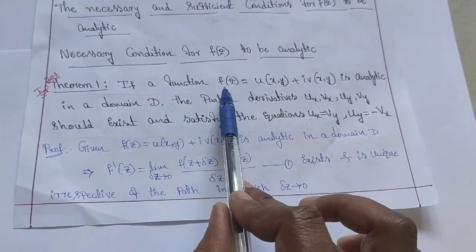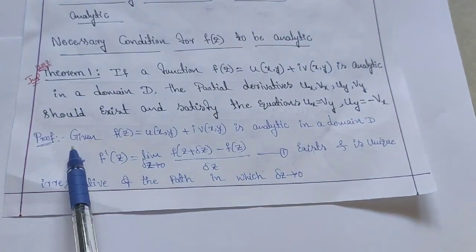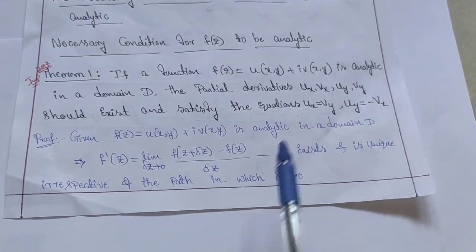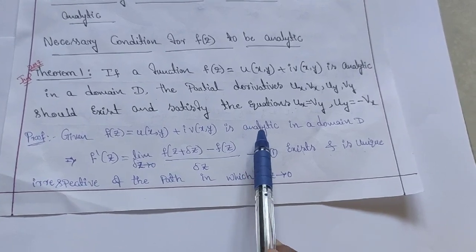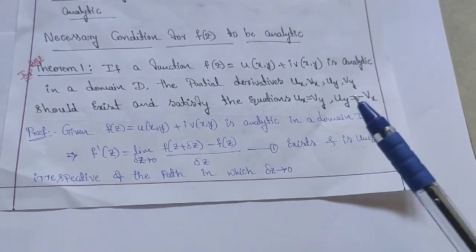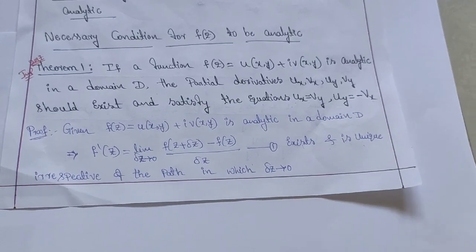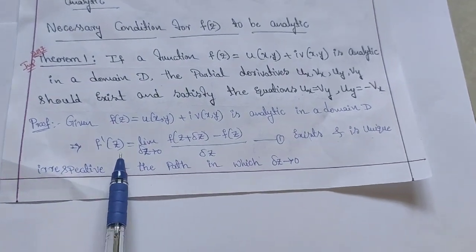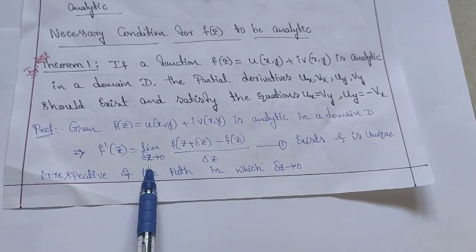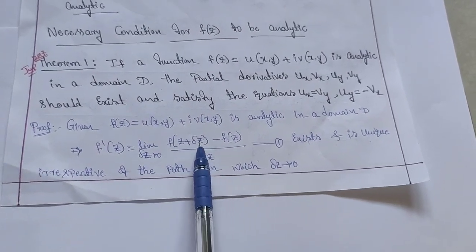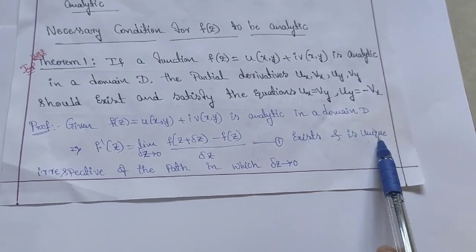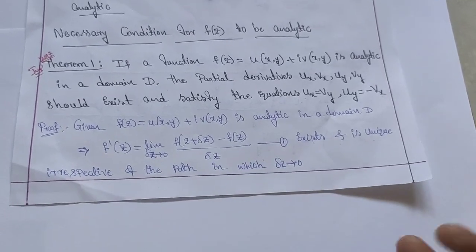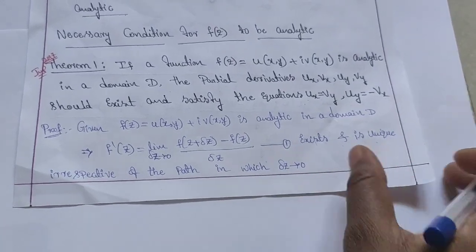Let's see the proof. Given: f of z equals U plus iV is analytic in a domain. Since analytic means differentiable, we use the differentiable formula: f dash of z equals the limit as delta z tends to 0 of [f(z + delta z) minus f(z)] divided by delta z, existing finitely irrespective of the path along which delta z tends to 0. Call this equation 1.